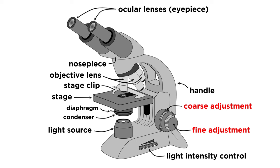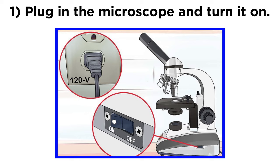There are also focus knobs on the side of the microscope, the larger one being the coarse focus knob, used for larger changes in focus, and the smaller one being the fine focus knob, used for smaller adjustments in focus.